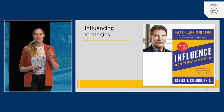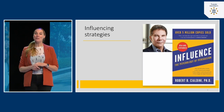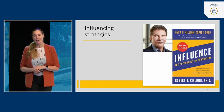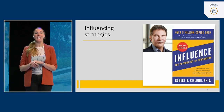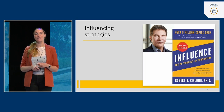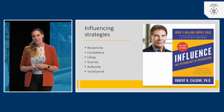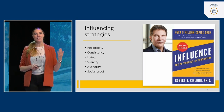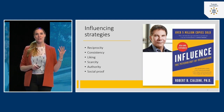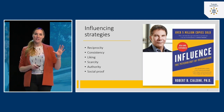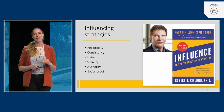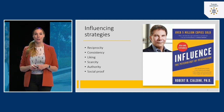I'll give you a short summary of his book and the different influencing strategies he discusses. There are six of them: reciprocity, consistency, liking, scarcity, authority, and social proof. I will discuss them one by one and give you examples of how these influencing strategies work.